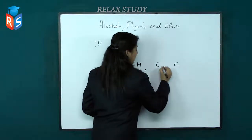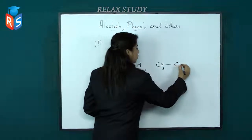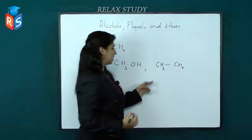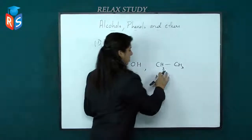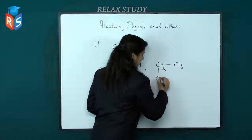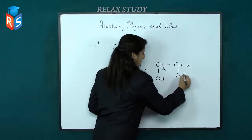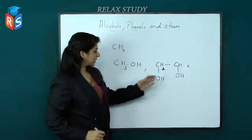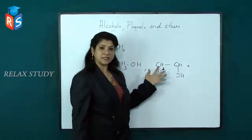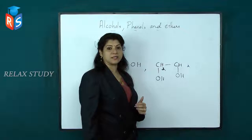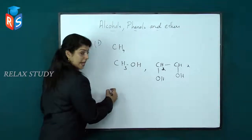In the case of ethane, which has two carbon atoms, one hydrogen atom from each carbon atom gets replaced by an OH group. It becomes dihydric because in this case two OH groups are present, so this compound comes under dihydric alcohols.